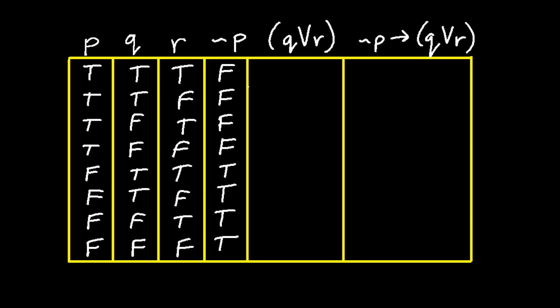Next we will work with q or r. Remember with or statements, just one of the two has to be true for the statement to be true. So we are comparing the columns q and r. True or true is true. True or false is true. False or true is true. False or false is false. True or true is true. True or false is true. False or true is true. And false or false is false.